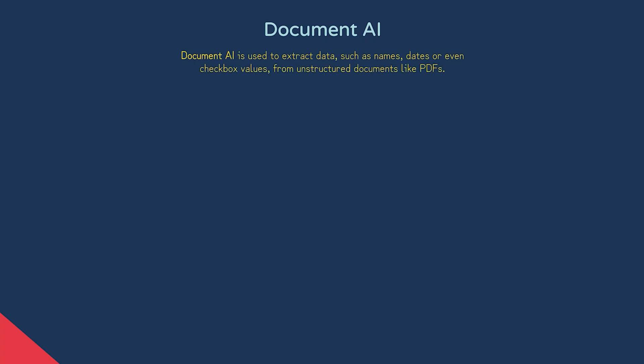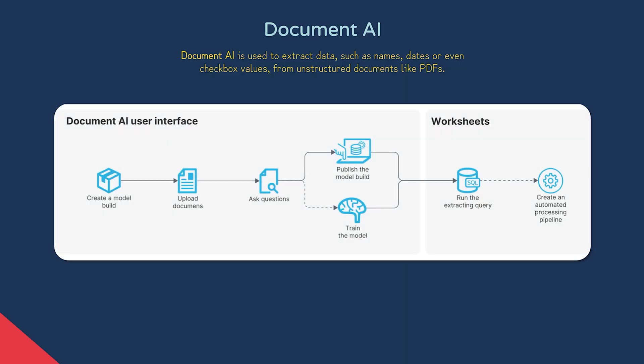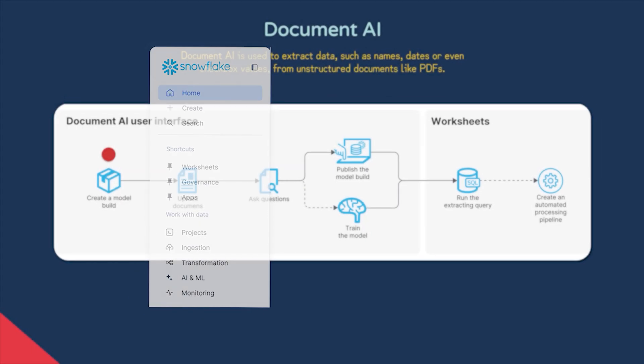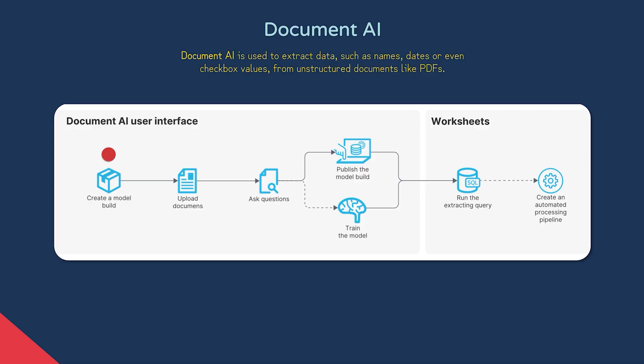Document AI is used to extract data such as names, dates, or even checkbox values from unstructured documents like PDFs. To understand how this is achieved in Snowflake, let's refer to their Document AI Overview flowchart. The first step is to create a new model build, done through the UI under the AI and ML heading on a tab called Document AI. A model build represents a single type of document you'd like to extract data from.